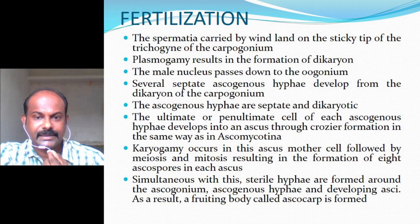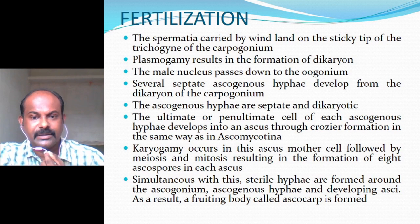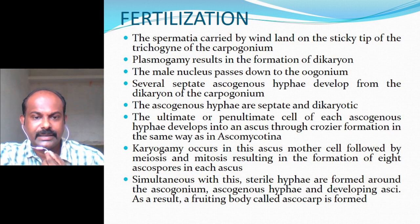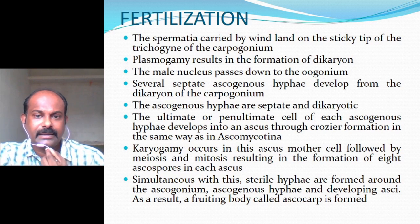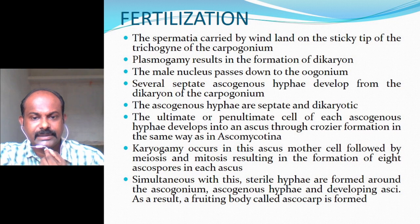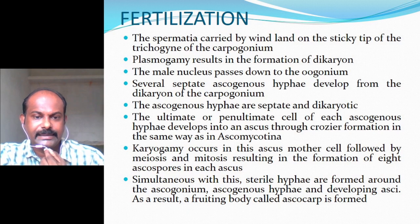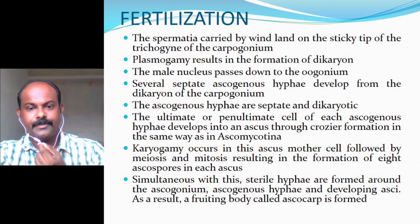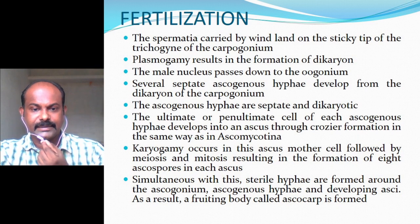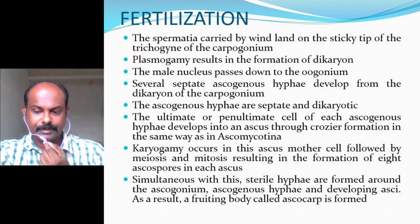Several septate ascogenous hyphae develop from the dikaryon of the carpogonium. The ascogenous hyphae are septate and dikaryotic. The ultimate or penultimate cell of each ascogenous hypha develops into an ascus through crozier formation, in the same way as in Ascomycotina. Karyogamy occurs in the ascus mother cell, followed by meiosis and mitosis, resulting in the formation of eight ascospores in each ascus. Simultaneously, sterile hyphae form around the ascogonium, ascogenous hyphae, and developing asci, resulting in formation of a fruiting body called the ascocarp.